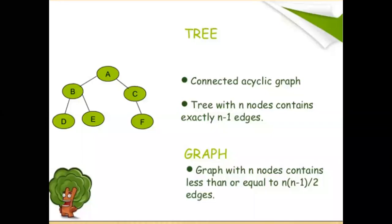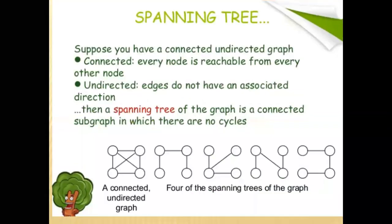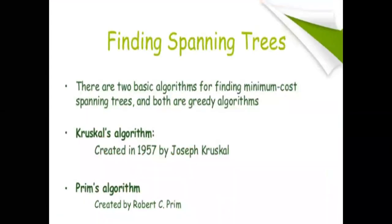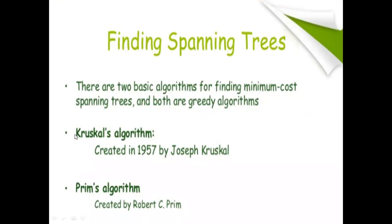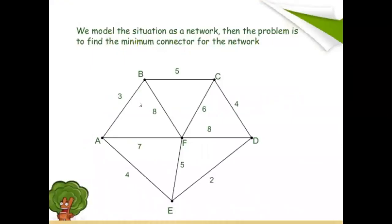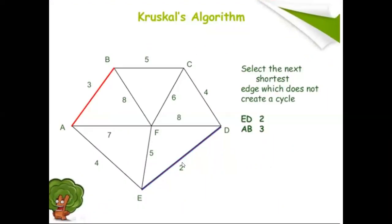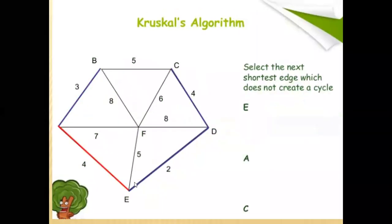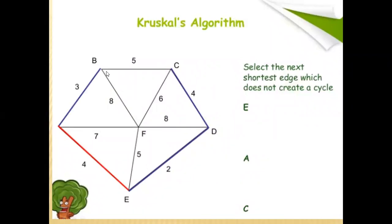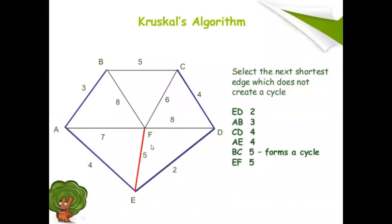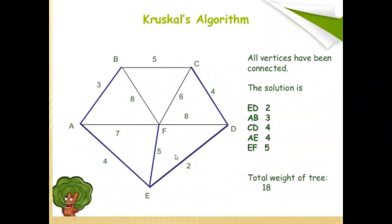Every graph has multiple spanning trees. There is only one minimum cost spanning tree, found using two methods. In Kruskal's algorithm: select minimum cost edge two, next three, next four, next four, then suppose you select BC — it forms a cycle, so reject BC. Select EF instead. This forms the minimum cost spanning tree.